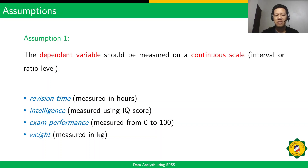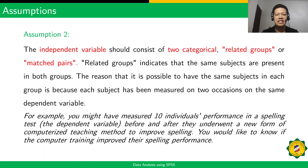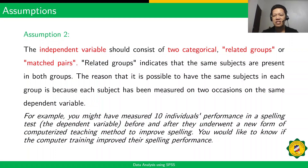Exam performance measured from 0 to 100, and weight measured in kilograms. The second assumption is that the independent variable should consist of two categorical related groups or matched pairs. Related groups indicate that the same subjects are present in both groups, because each subject has been measured on two different occasions on the same dependent variable.